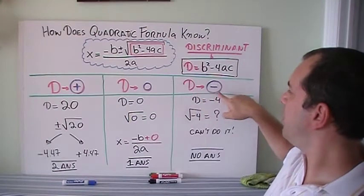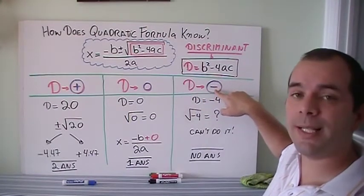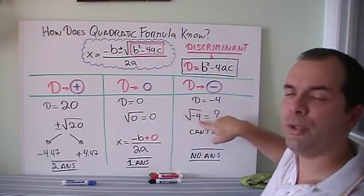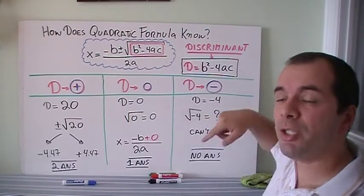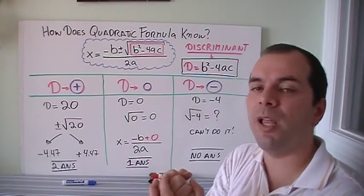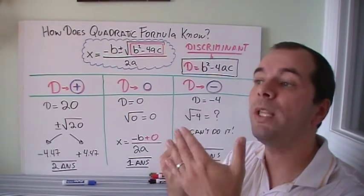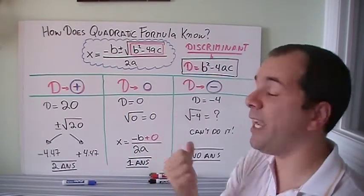And lastly, when my discriminant is negative, have you ever tried to do the square root of a negative number? We're gonna have an error in your calculator because you cannot get two numbers that multiply by themselves to give you a negative number.